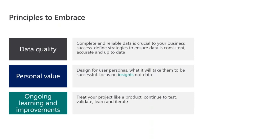The second principle is personal value — focus on what the user needs. Break down your user groups into different personas and start from there. Everyone is using the same set of entities in the system, but it's about how it's being represented to each user group. Focus on insights, not just data — think about how you're going to deliver value for each user in the system.